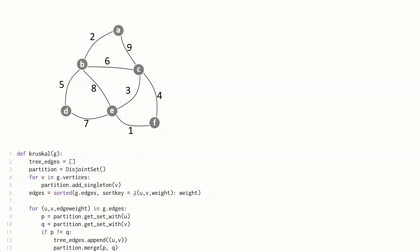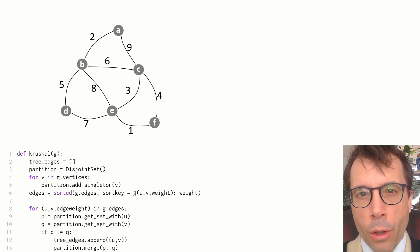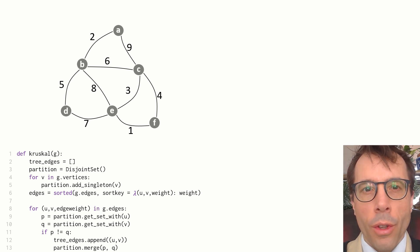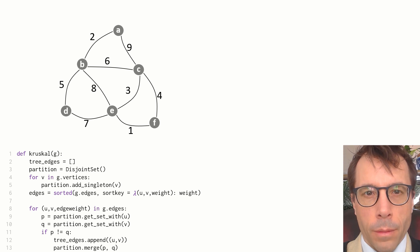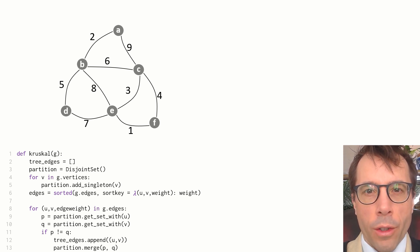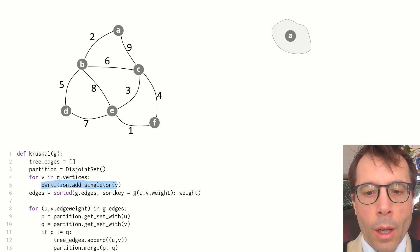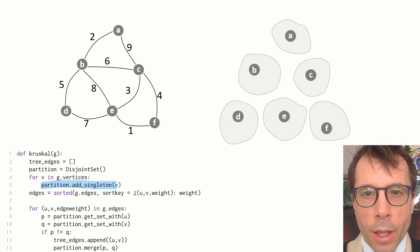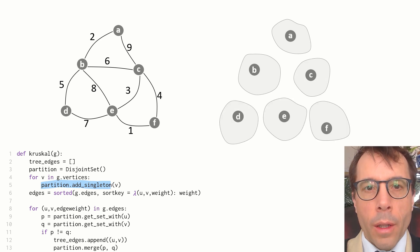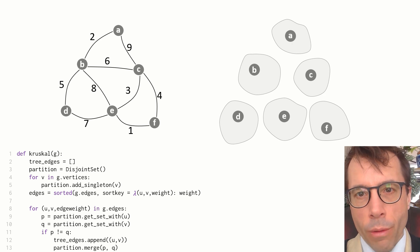To introduce the Disjoint Set data structure, let me start off with an algorithm that uses it: Kruskal's algorithm for finding a minimum spanning tree. If you remember Kruskal's algorithm from an earlier video, good; if you don't, then don't worry. The only thing we need in this video is to know how it uses its data structure, and that's fairly simple. Kruskal's algorithm starts with an undirected graph, and the first thing it does is create a Disjoint Set data structure, which it then populates with all the vertices of the graph by calling the AddSingleton method. Think of each vertex as belonging to a set, and at the beginning there's one set per vertex. Next, it iterates through all the edges of the graph in order of edge weight, lowest weight first.